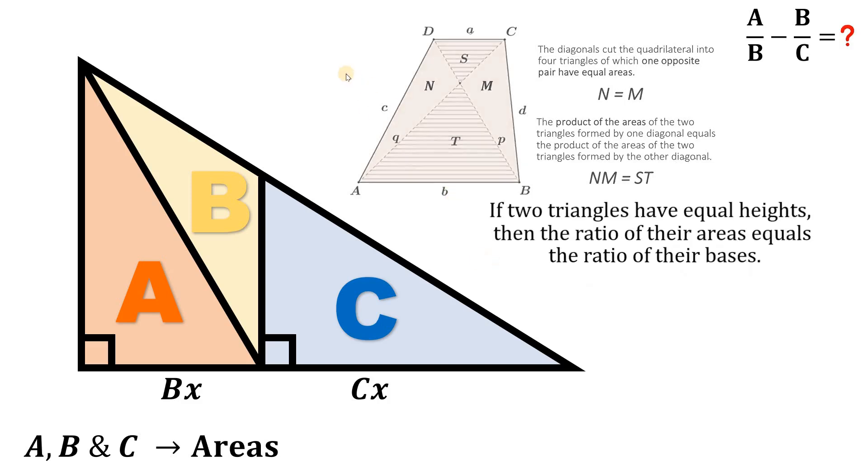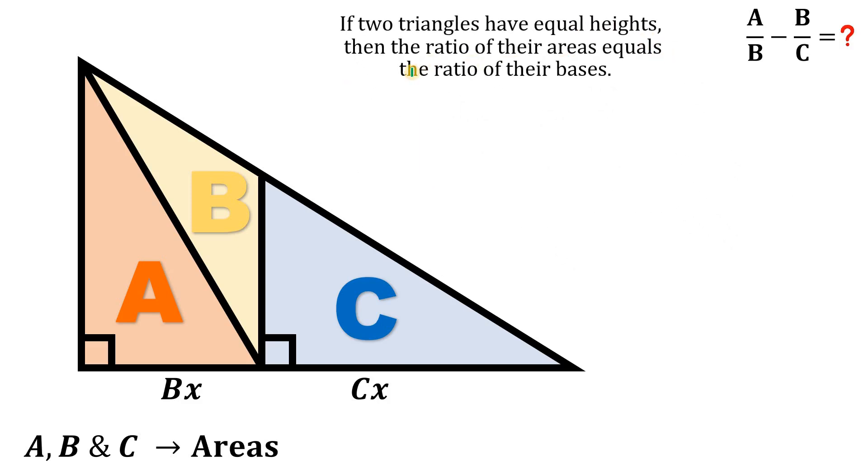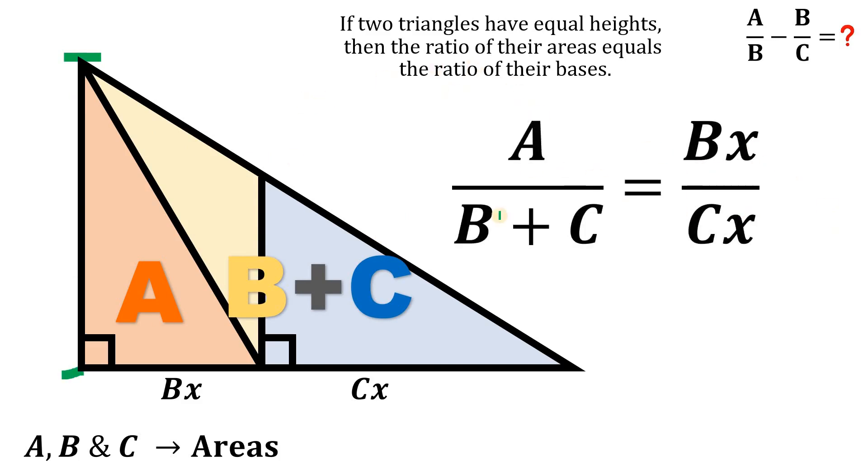And from here, we will use again this concept. If two triangles have equal heights, then the ratio of their areas equals the ratio of their bases. But from here, we will combine the area of B and C like this. So we have two triangles with the same height for sure. Therefore, we can say that the ratio of their areas equals the ratio of their bases.